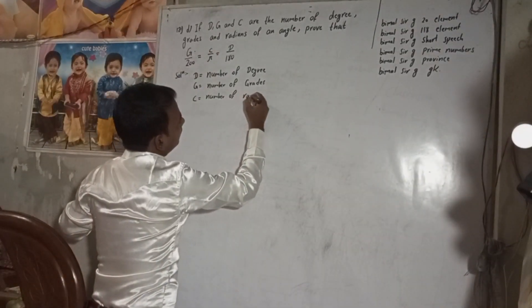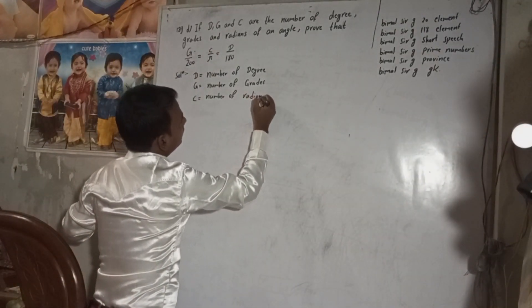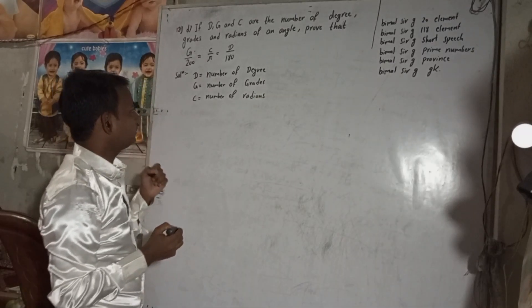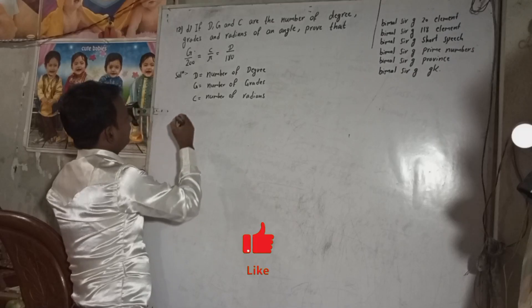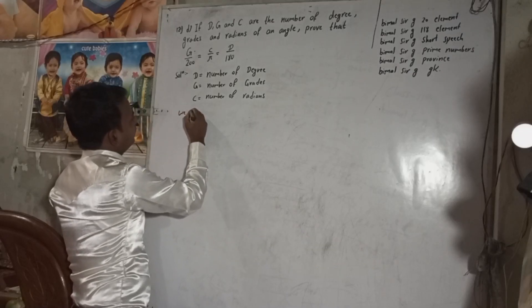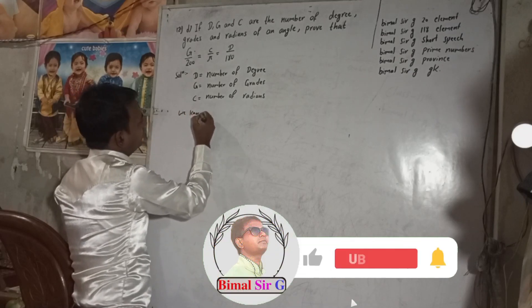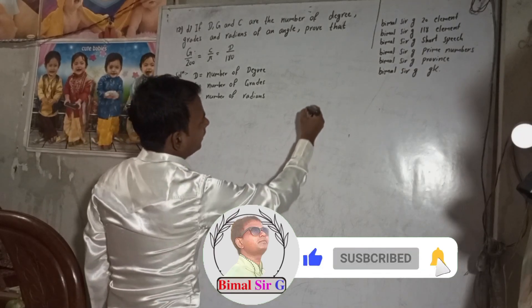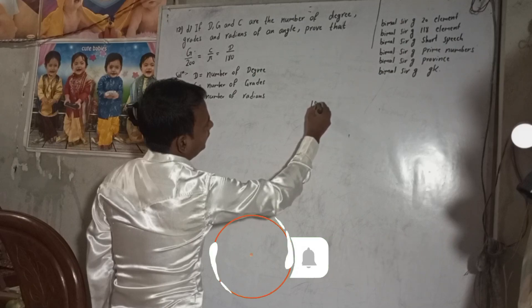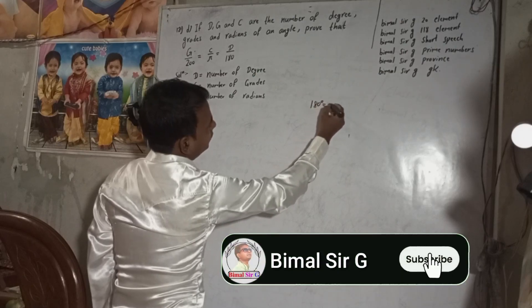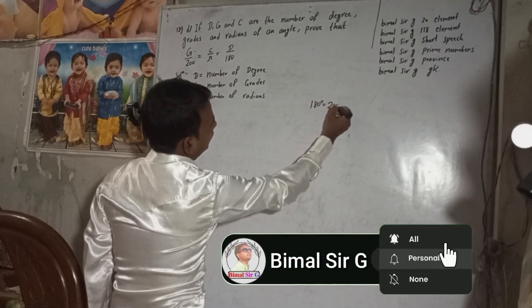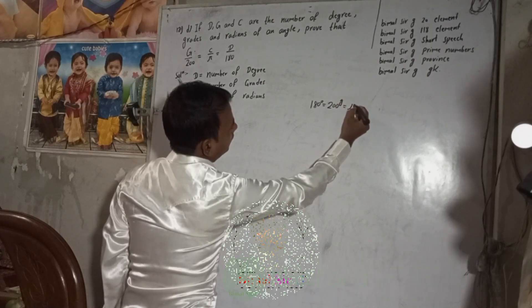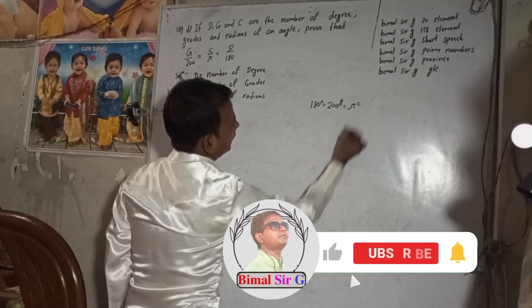We know we have two relations: 180 degrees is equal to 200 grades, and 200 grades is equal to Pi radians.